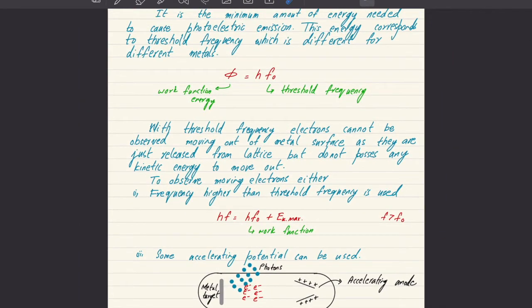Something slightly interesting about work function energy is that if the radiation has exactly the threshold frequency, providing the work function energy, the electrons are still not going to be emitted out. That is because we have provided energy to the electrons to break the lattice, but these electrons don't have any kinetic energy to move out. Hence, we need to provide a frequency slightly higher than the threshold frequency so that electrons can be seen to be emitted out.